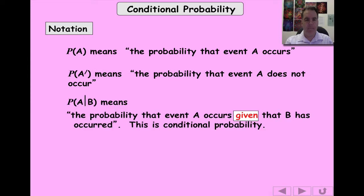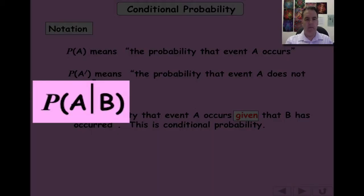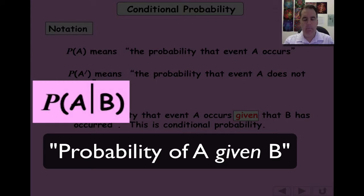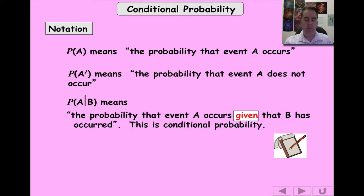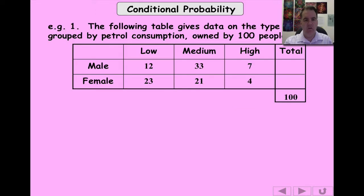The notation you're going to need to know is P(A|B) — probability A with a straight line B. That means the probability of A happening given that B has already happened. That's the notation we're going to use for conditional probability.